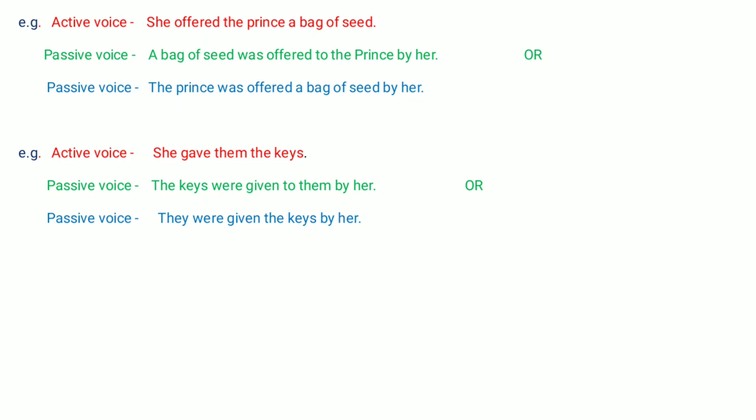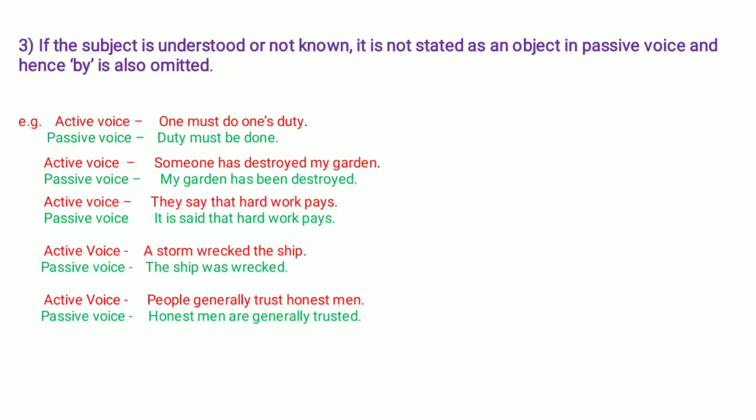This was the type where there are two objects. Now we move to the third type: if the subject is understood or not known, it is not stated as an object in passive voice, and hence 'by' is also omitted. In some sentences, the subject or speaker is not a particular person — common statements are made. In such cases, the subject is understood, and 'by' plus subject is omitted.